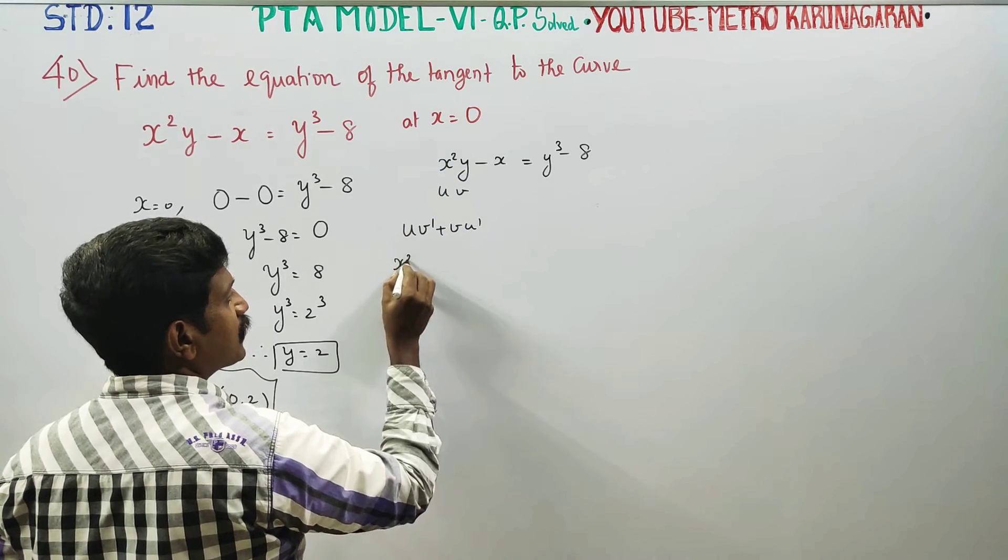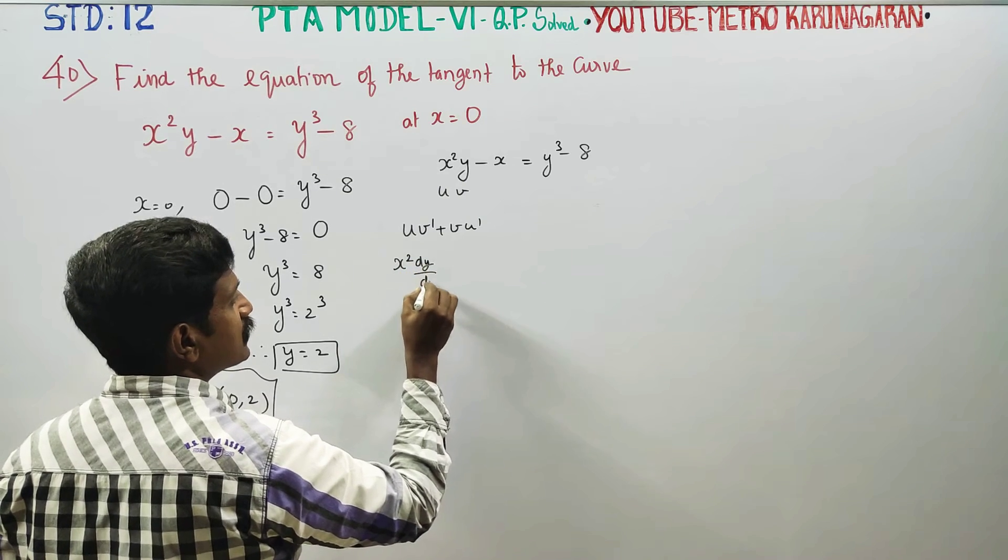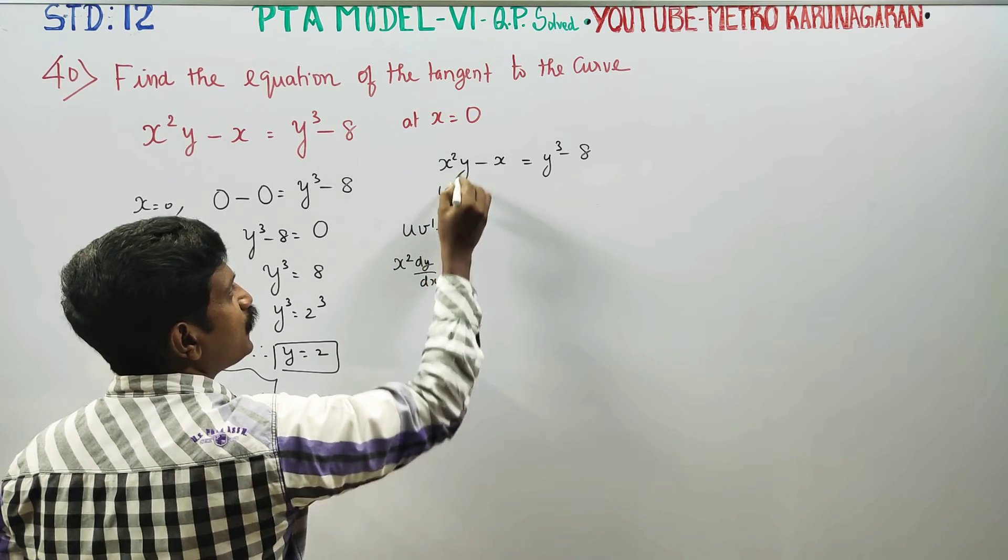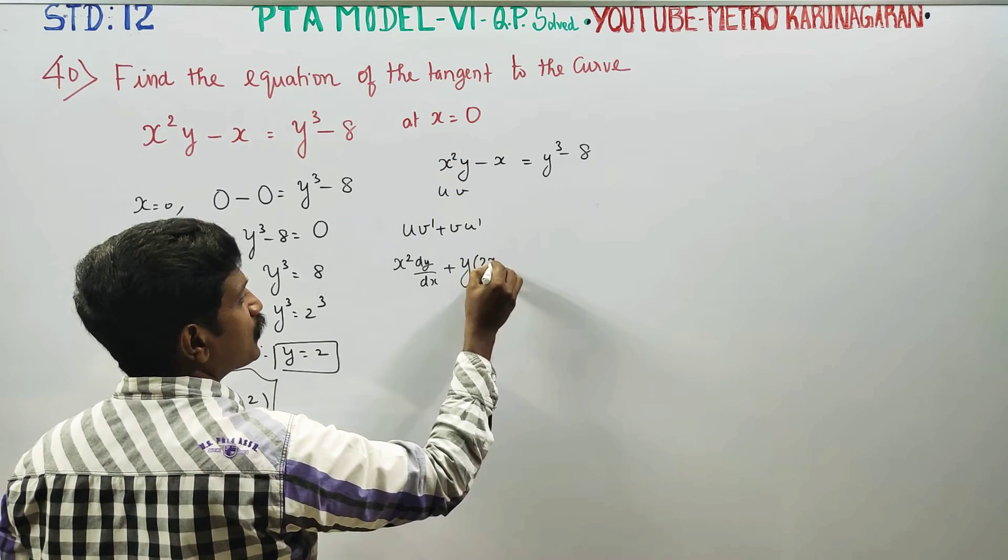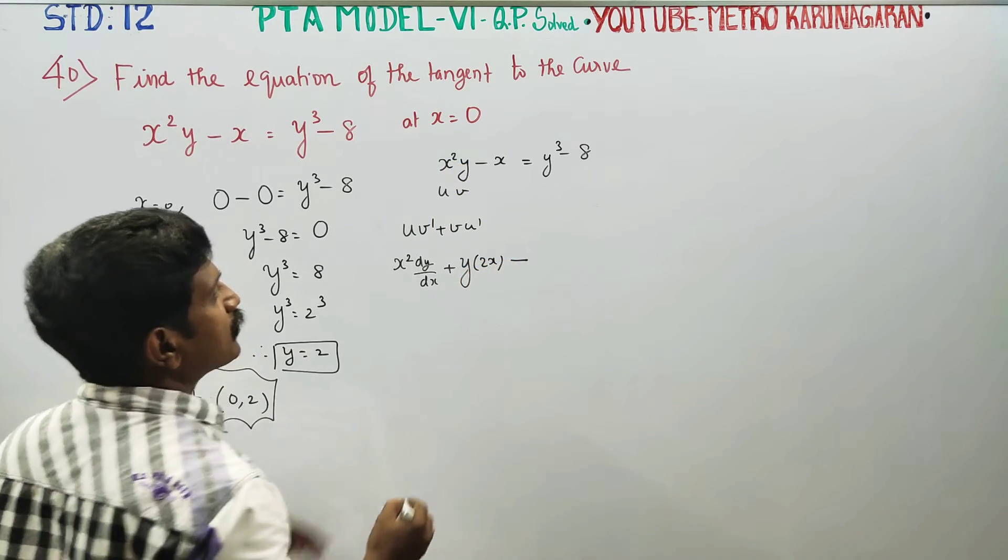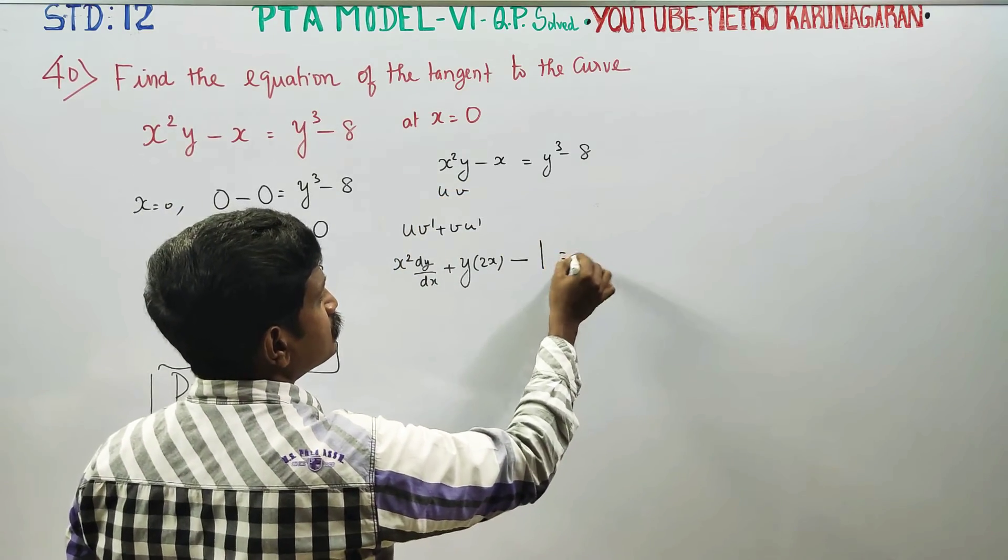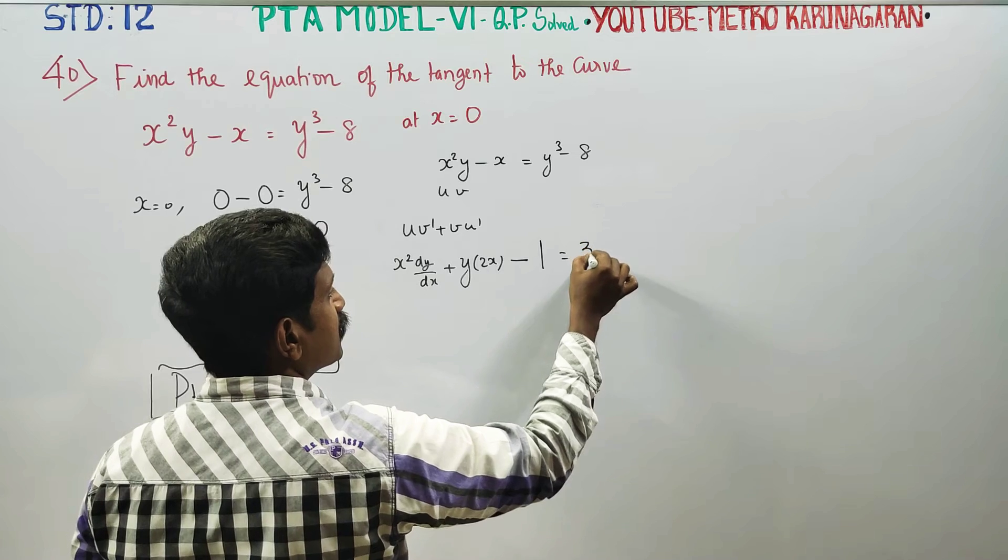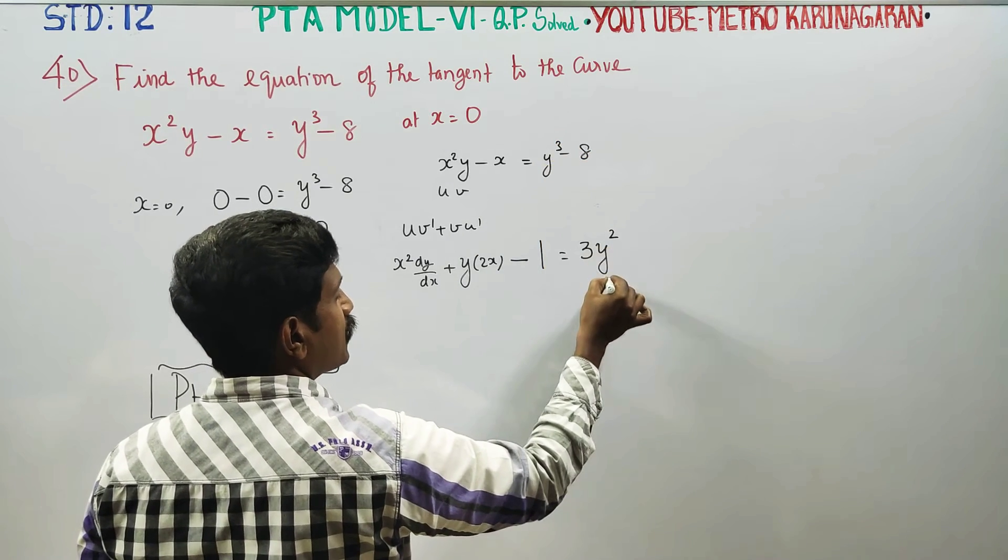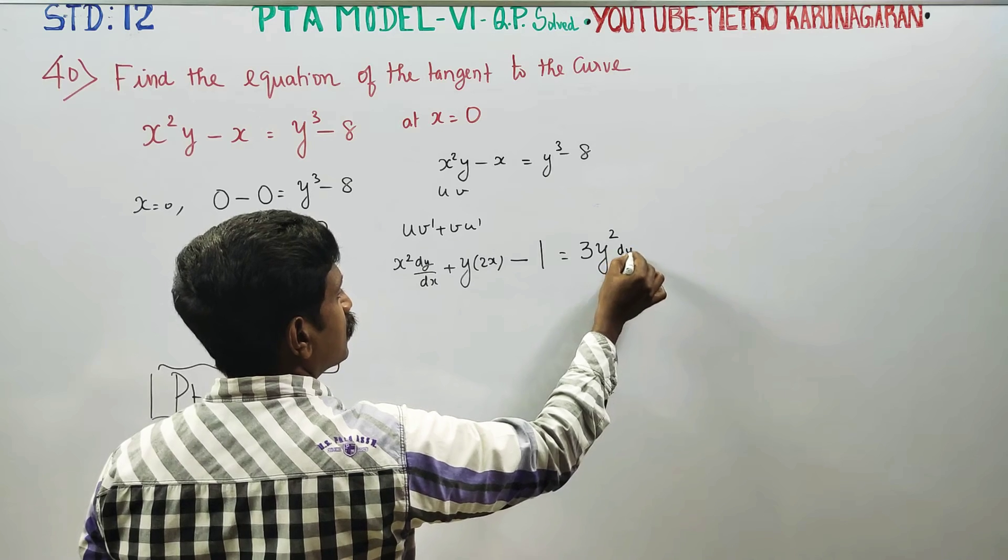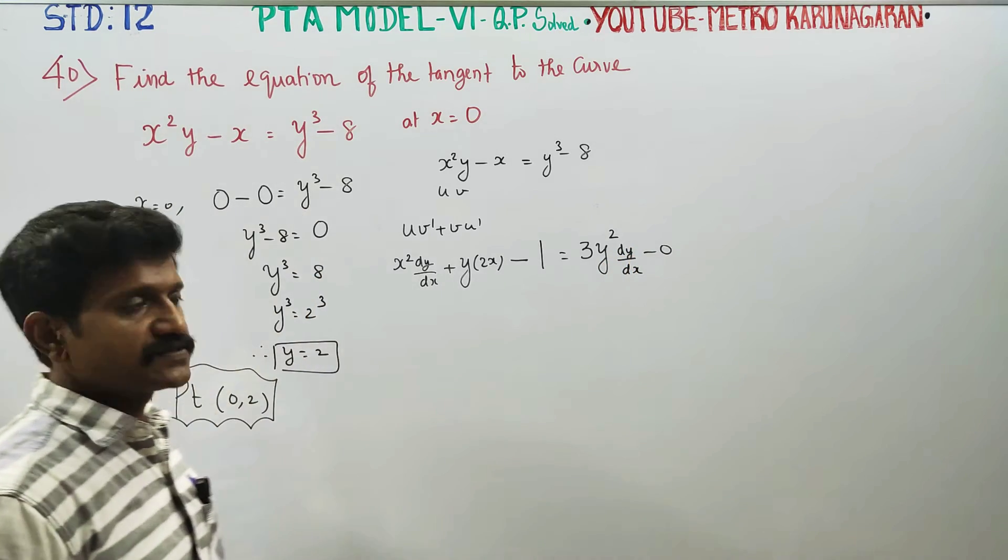u is equal to x squared. u times v dash: x squared times dy by dx plus v dash u: differentiate 2x times y. If we differentiate x is 1. y cube is 3y squared dy by dx, and differentiate minus 8 is 0.